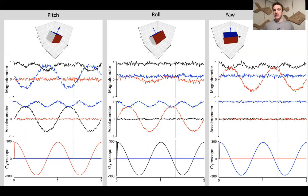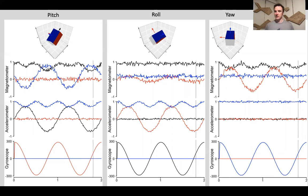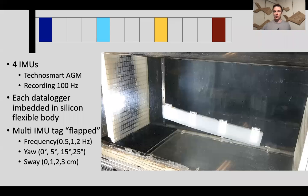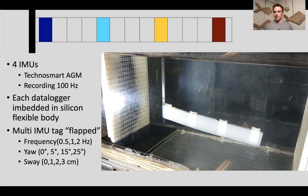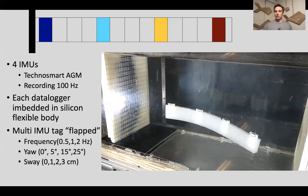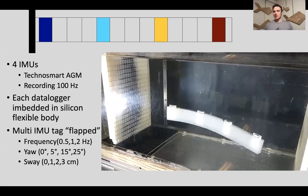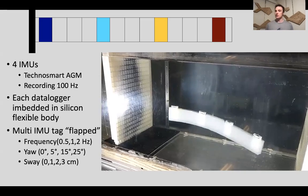I wanted to take these sensors, fuse them together, and have an estimate of orientation along the body. The way I did this was by taking four inertial measurement unit data loggers and had each of them record at 100 hertz. I then implanted each of these data loggers in this flexible silicon foil, just to hold them relatively stationary. And then I would flap this foil back and forth.